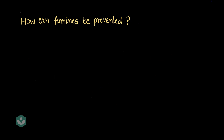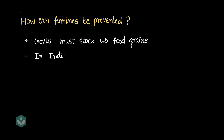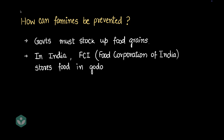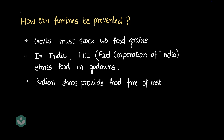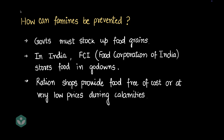How can famines be prevented? It's the responsibility of the government to store enough food grain for the entire population in case something happens. In India, the Food Corporation of India stocks up food grains in go-downs all over the country in every district, so that in case a food shortage or war-like situation arises, food can be distributed to people who need it. Ration shops provide food free of cost, or at very low prices, during calamities.